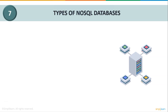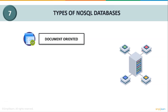Let us look at some types of NoSQL databases. First, we have document-oriented databases. The document database typically stores self-describing JSON, XML, and BSON documents. They are similar to key-value stores, but the value is a single document storing all data related to a specific key. Popular fields can be indexed for faster retrieval, and each document can have the same or different data structure. MongoDB, CouchDB, and Cloudant are examples.